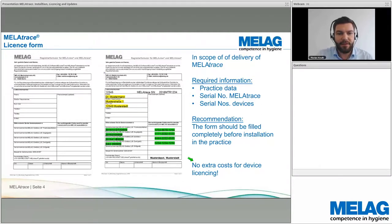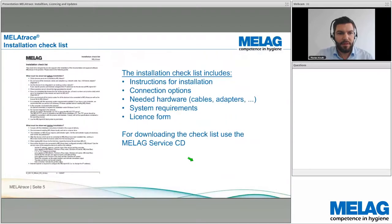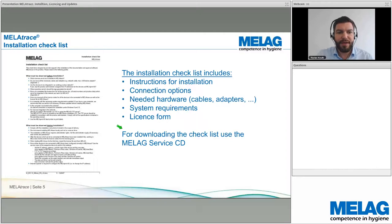The installation checklist is a very useful tool for technicians performing the installation. It's a document of about six pages and includes instructions for the installation, all connection options for the devices, the needed hardware such as cables and adapters, system requirements, and also the license form. You'll find it on the service CD or available for download after the webinar. It will highlight points you may not have thought about, so when you can check off all points, you know you're well prepared for the installation.